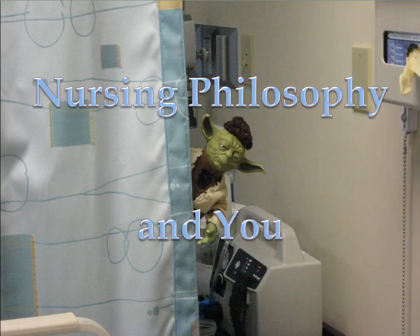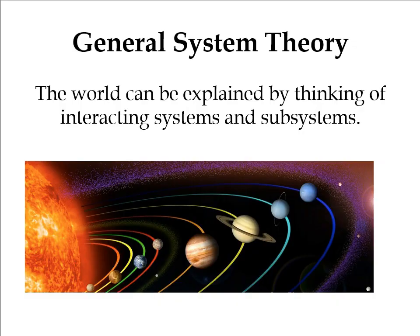In this program we use general system theory, which says the world can be explained by thinking of interacting systems and subsystems. You can go as far out as the universe being made up of galaxies, which are made of star clusters, which are made of solar systems, which are made of planets, eventually getting to earth. Among earth's systems are humans, and an individual person is made up of multiple physiological subsystems like respiratory and cardiovascular. Those systems are made of cells, which are made of organelles, which are made of molecules, which are made of atoms.